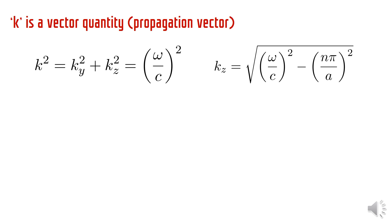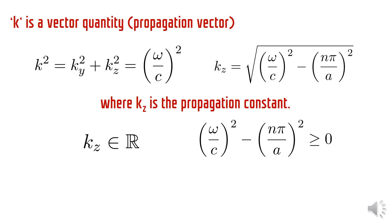Since kz is in the direction of propagation, it is also termed as the propagation constant. And it should be a real quantity because if it is complex, then the wave would be a decaying wave and not a propagating wave. This condition gives us a lower bound on the frequency of the incident wave. If the frequency is lower than this cutoff frequency, then there would be a decaying wave instead of a propagating wave.